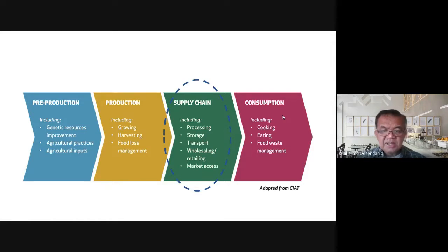Supply chain includes processing, storage, transport, wholesaling, retailing, and market access. This is really part of a complicated business, the supply chain, and then finally the consumption.